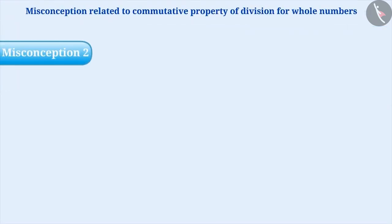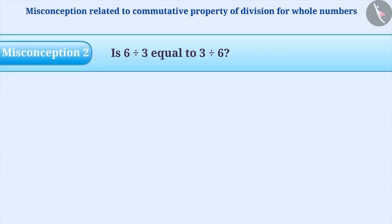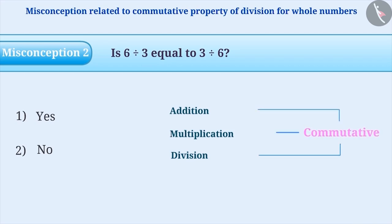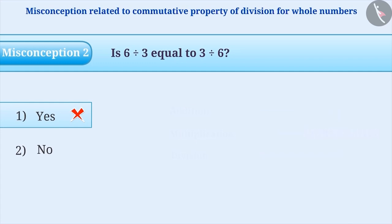Misconception 2: Is 6 divided by 3 equal to 3 divided by 6? It is a common misunderstanding that, just like addition and multiplication, division is also commutative. With this misunderstanding, the incorrect answer yes is chosen.